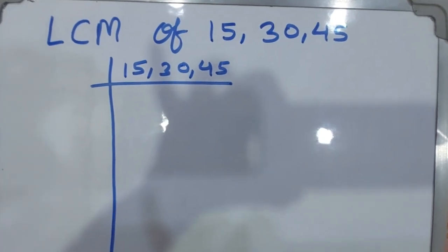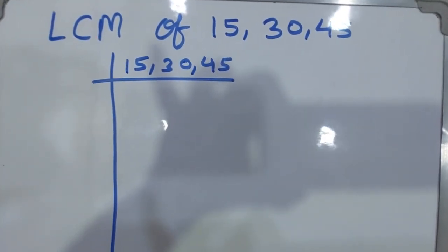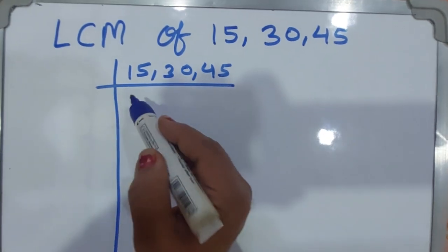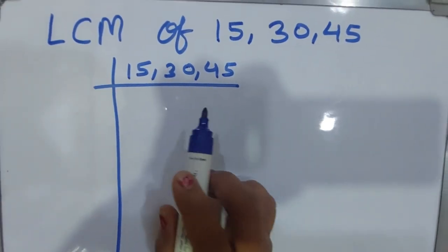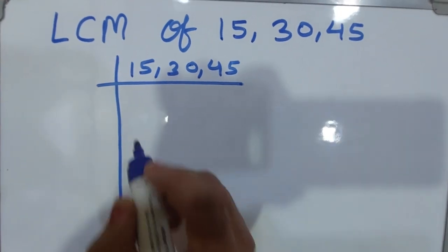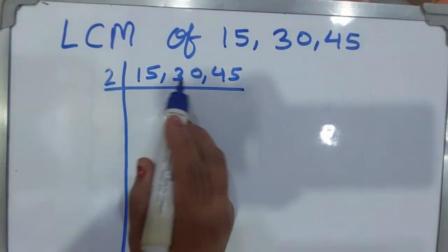Hello everyone, today we find the LCM of 15, 30, and 45. First, you can see we start with the small prime number. The smallest prime number will be 2. Then you can start with 2. Is 2 divisible by 15, 30, 45? No, only 30.